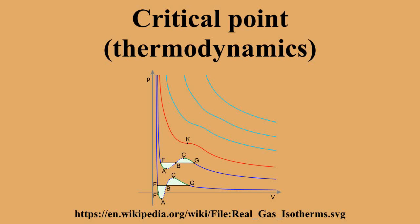In thermodynamics, a critical point is the end point of a phase equilibrium curve. The most prominent example is the liquid-vapor critical point, the end point of the pressure-temperature curve that designates conditions under which a liquid and its vapor can coexist.